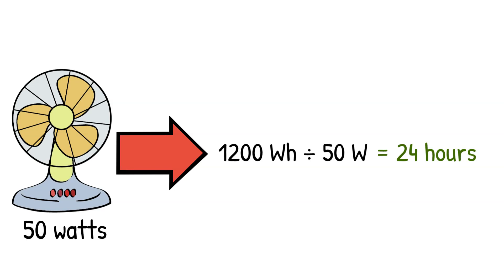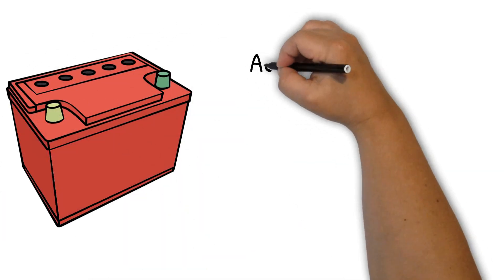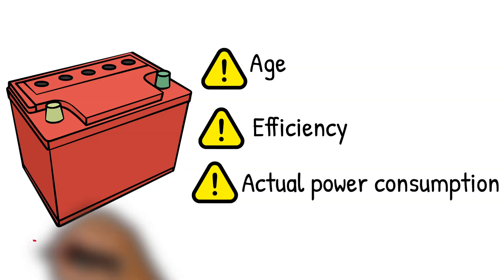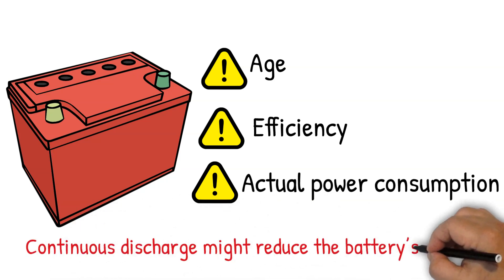But, as with all things, real-world conditions can affect this. Factors such as battery age, efficiency, and actual power consumption can influence the actual running time. Plus, continuous discharge might reduce the battery's lifespan.